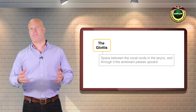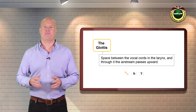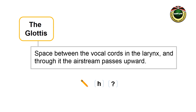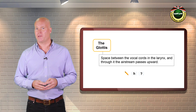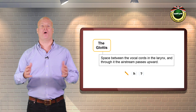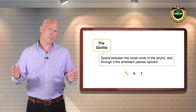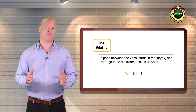Let's now talk about the glottis. It's the space between the vocal cords and the larynx, and through it passes the airstream upwards. When we breathe, the glottis is widely open, and when we speak, it is sometimes partially closed.